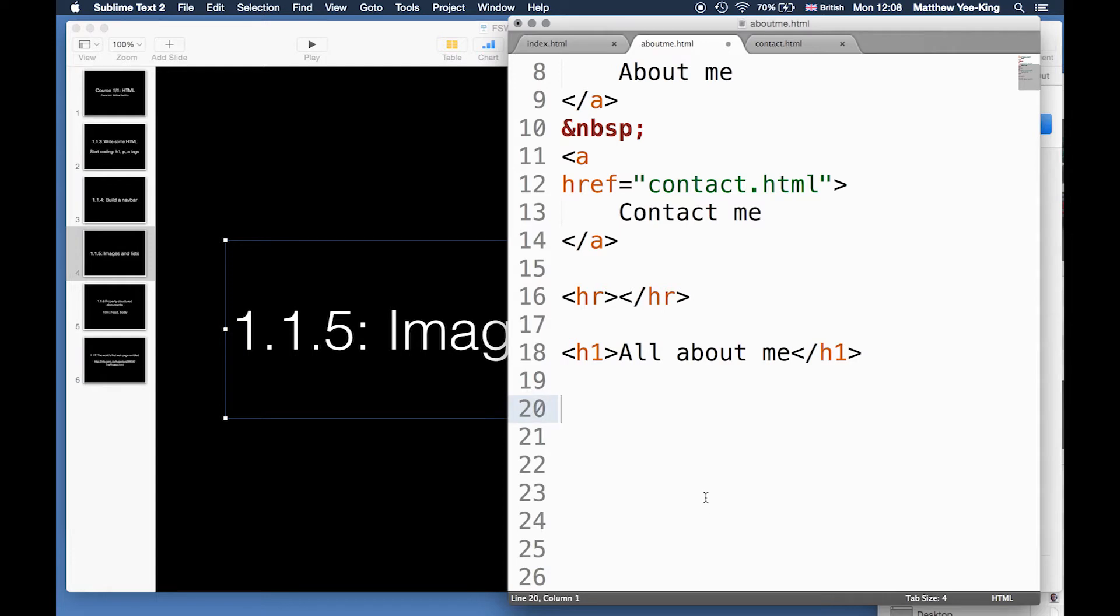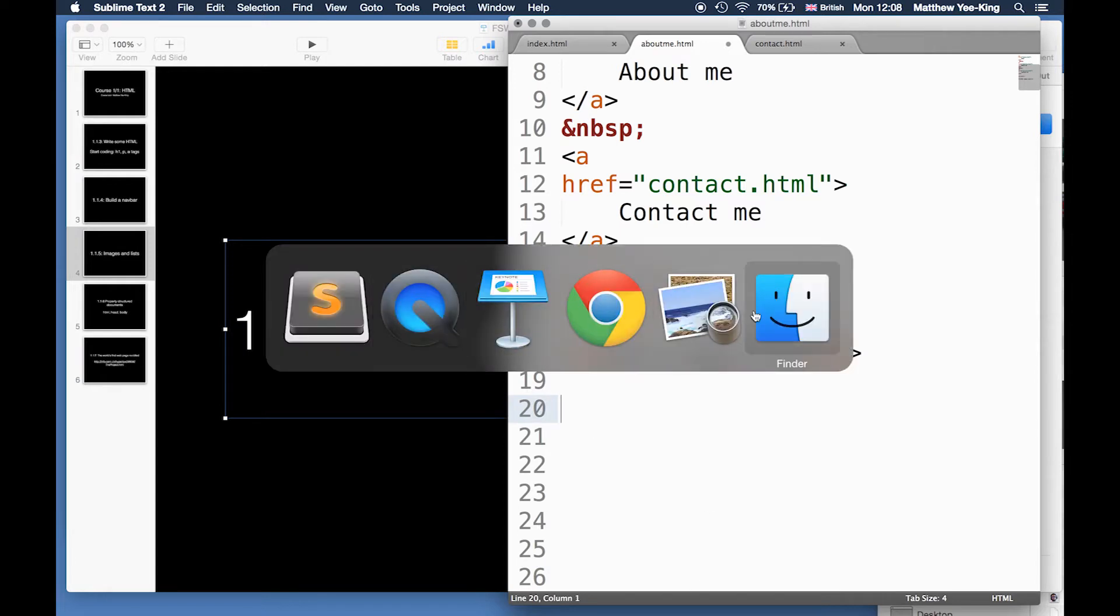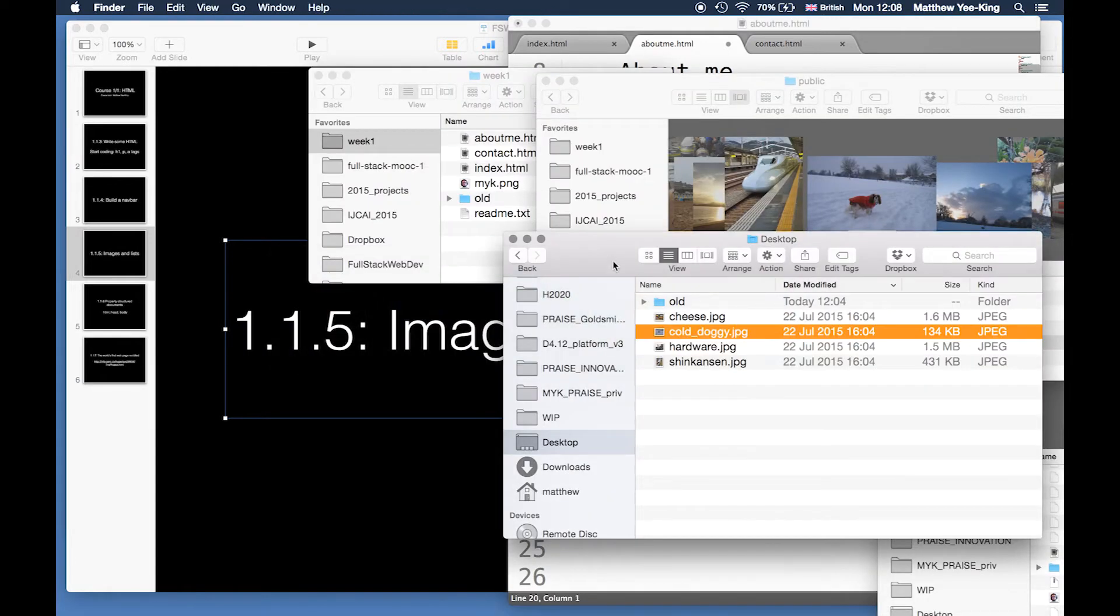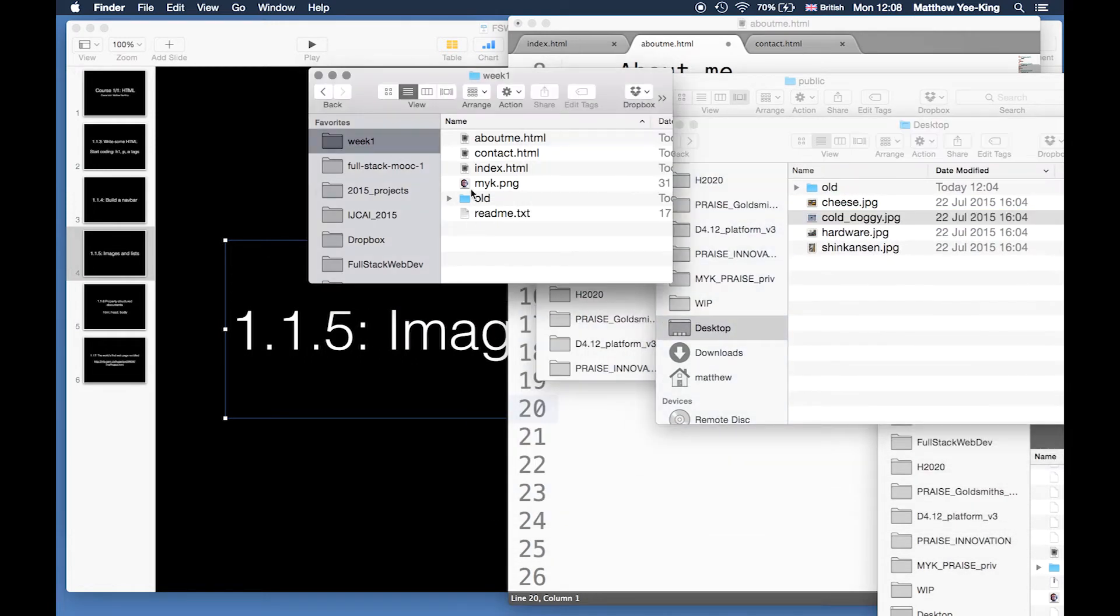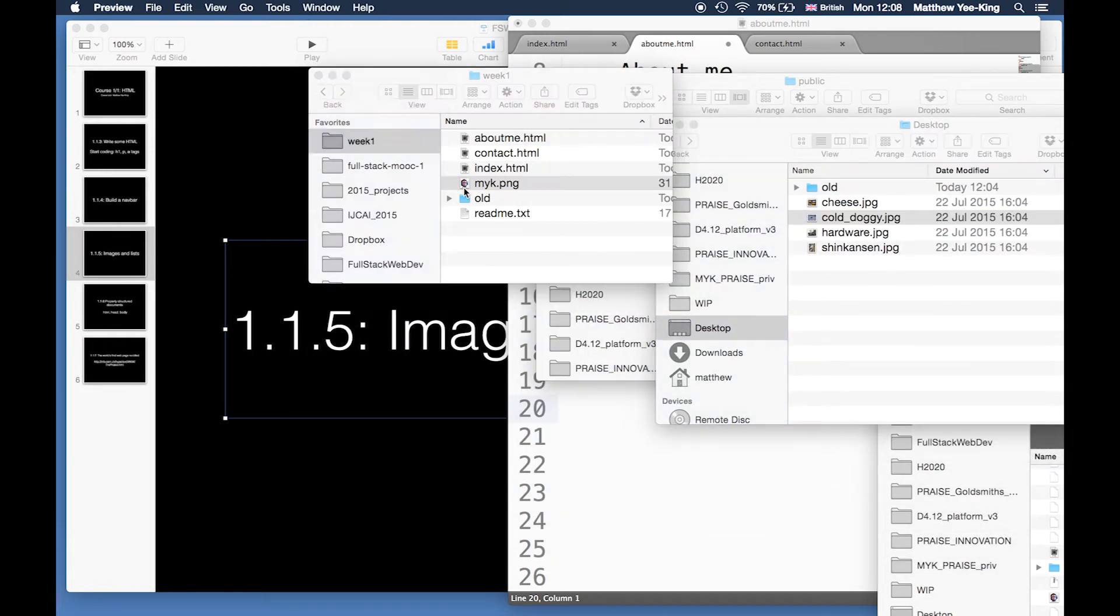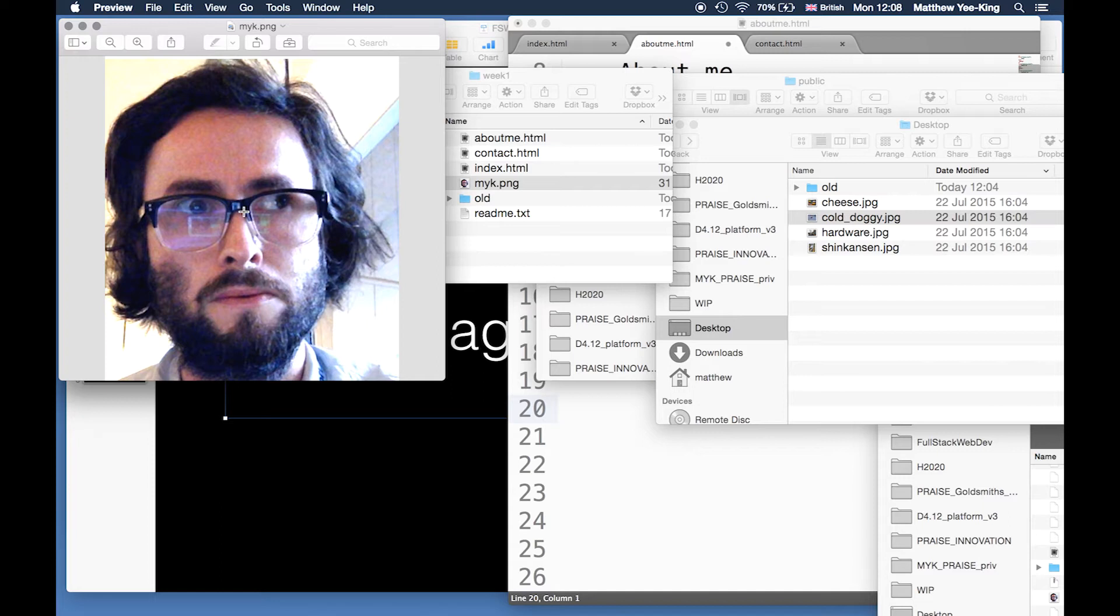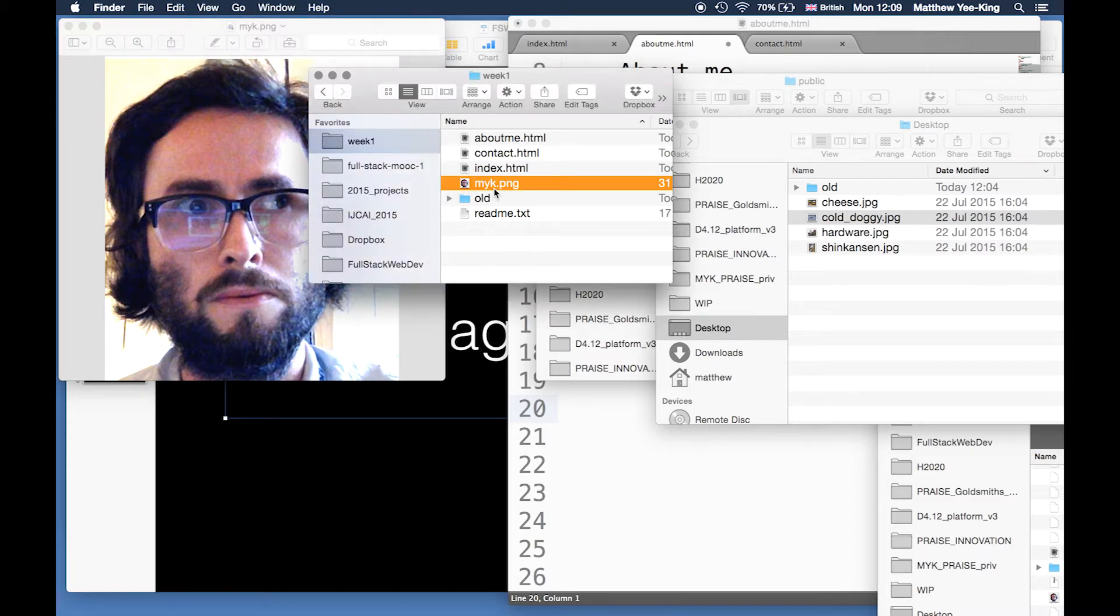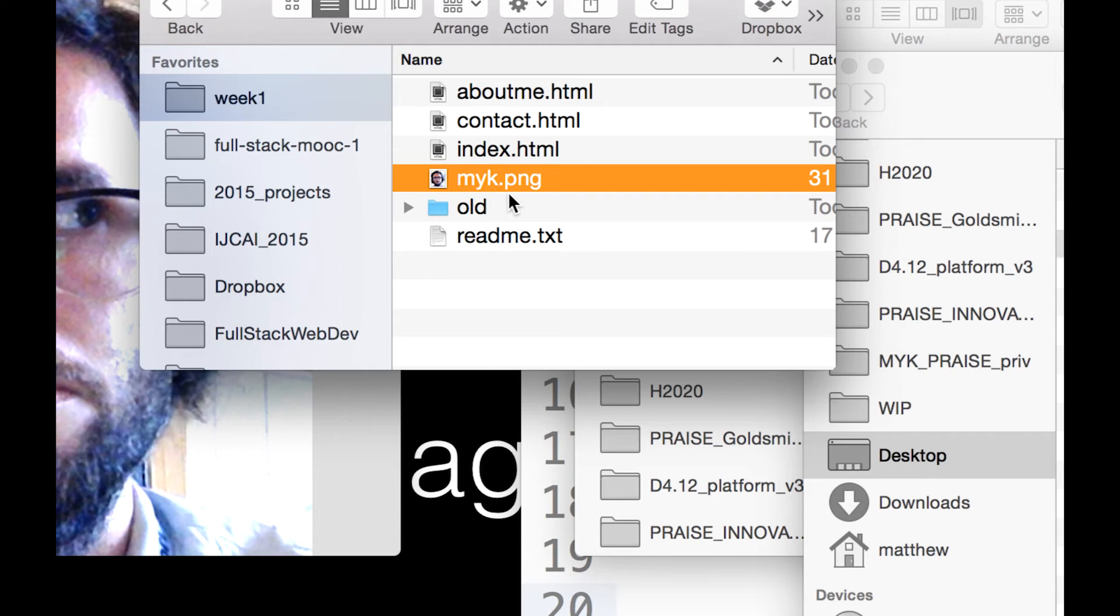I'm editing about me.html and in my folder here I've got a file called myk.png where I look a bit strange. That's myk.png, and png is the file extension that means it's an image file unlike the HTML files.